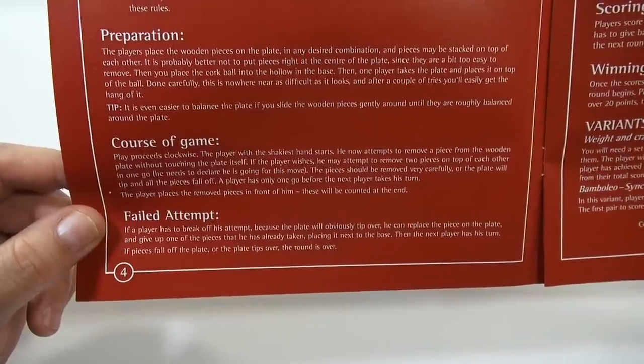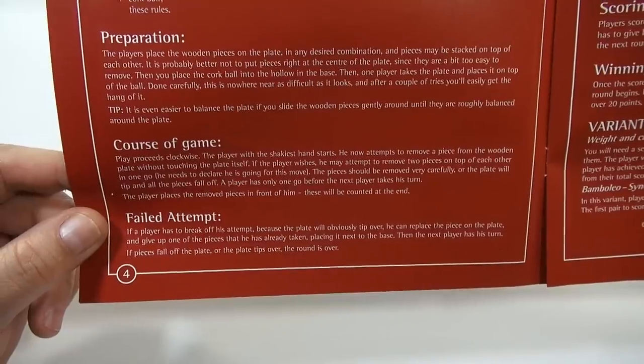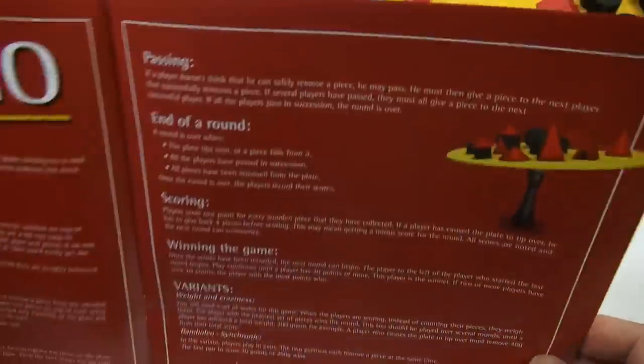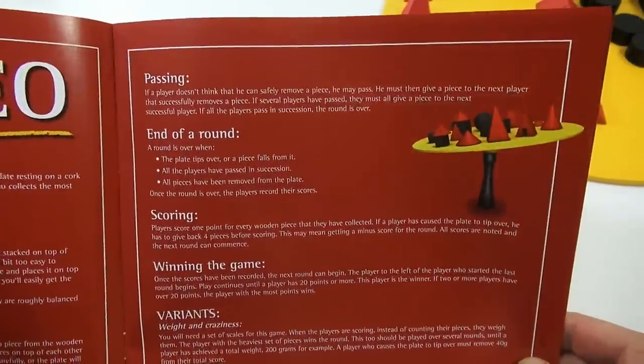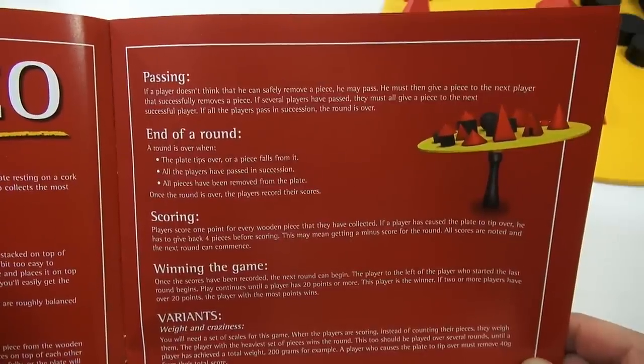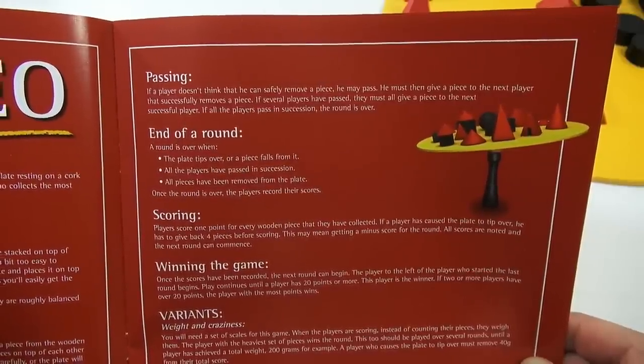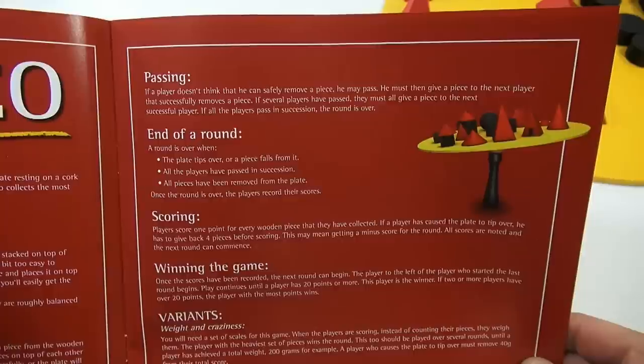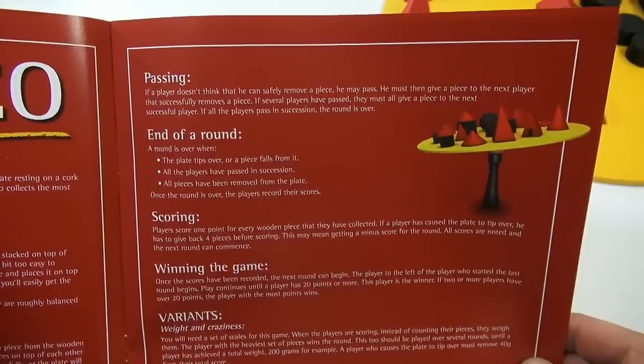Then the next player has his turn. If pieces fall off the plate or the plate tips over, the round is over. You can pass. If a player doesn't think that he can safely remove a piece, he may pass. He must then give a piece to the next player that successfully removes a piece. If several players have passed, they must all give a piece to the next successful player. If all the players pass in succession, the round is over.